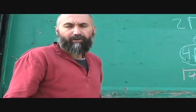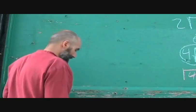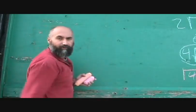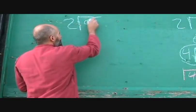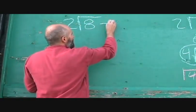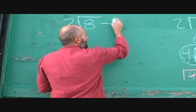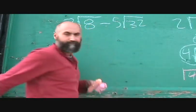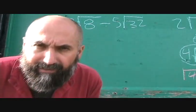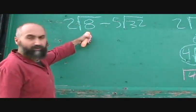So again, they can give you mixed radicals, adding and subtracting mixed radicals. You could have something like 2√8 minus 5√32.